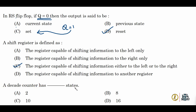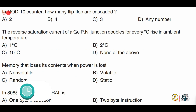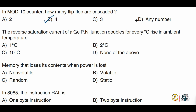Next: a decade counter has how many states? A decade counter is capable of counting 10 states, so option C is correct. Next: in a mod-10 counter, how many flip-flops are cascaded? A mod-10 counter is a decade counter. To build it, we cascade 4 flip-flops, which allows counting up to 2-raised-to-4 = 16 states. With only 3 flip-flops we could count 2-raised-to-3 = 8 states, which is insufficient. So for 10 states, 4 flip-flops are needed. The correct option is option B.